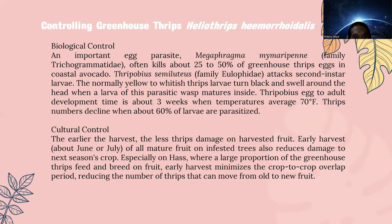The next topic is controlling greenhouse thrips, Heliothrips haemorrhoidalis. The first method is biological control. An important egg parasite, Megaphragma mymaripenne, family Trichogrammatidae, often kills about 25 to 75% of greenhouse thrips eggs in coastal avocado. Thripobius semiluteus, family Eulophidae, attacks second-instar larvae. The normally yellow thrips larvae turn black and swell around the head when a larva of this parasitoid matures inside. The Thripobius egg-to-adult development time is about 3 weeks when temperatures average 70°F. Thrips numbers decline when about 60% of larvae are parasitized.